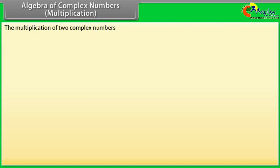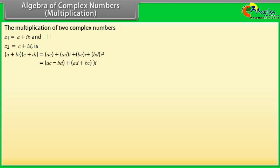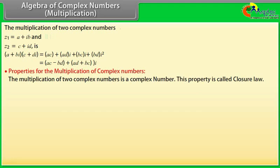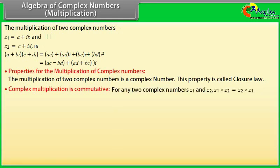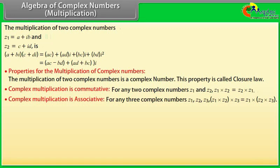Algebra of complex numbers — Multiplication. The multiplication of two complex numbers Z1 and Z2 is AC minus BD plus (AD plus BC) iota. Properties for multiplication: the product of two complex numbers is a complex number — closure law. Complex multiplication is commutative: for any two complex numbers Z1 and Z2, Z1 times Z2 equals Z2 times Z1. Complex multiplication is associative: for any three complex numbers Z1, Z2, Z3, (Z1 times Z2) times Z3 equals Z1 times (Z2 times Z3).